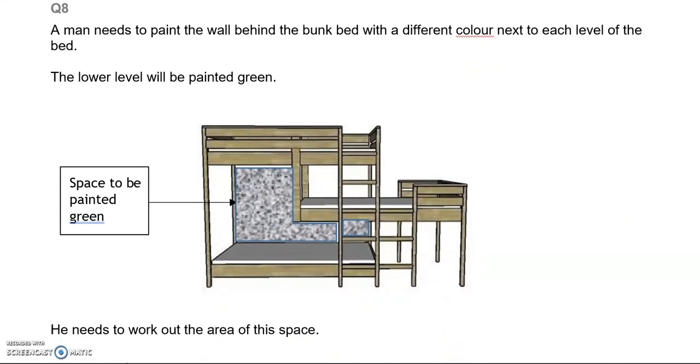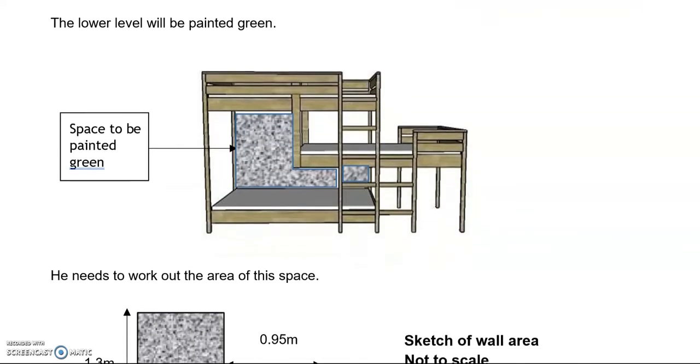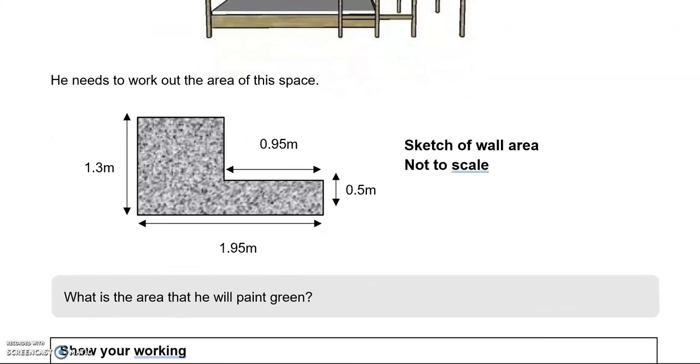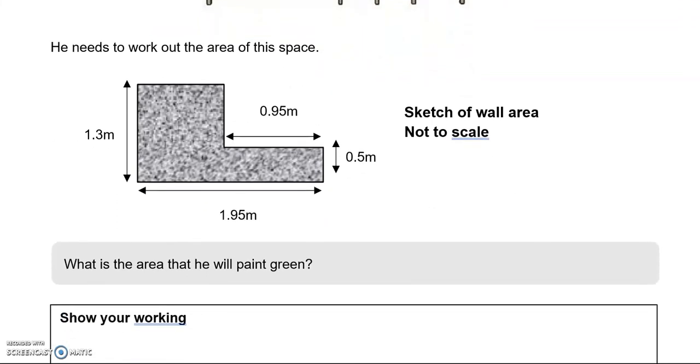A man needs to paint the wall behind the bunk bed with a different colour next to each level of the bed. The lower level will be painted green. He needs to work out the area of the space. We've got a sketch of the wall area which is not to scale. What is the area that he will paint green? This is a compound shape which we're going to have to split into two rectangles. I'm going to split it here.